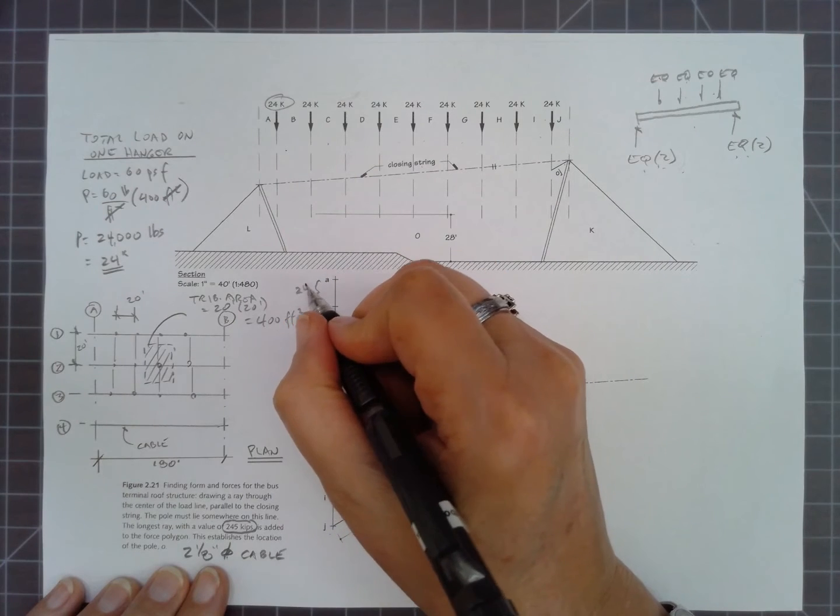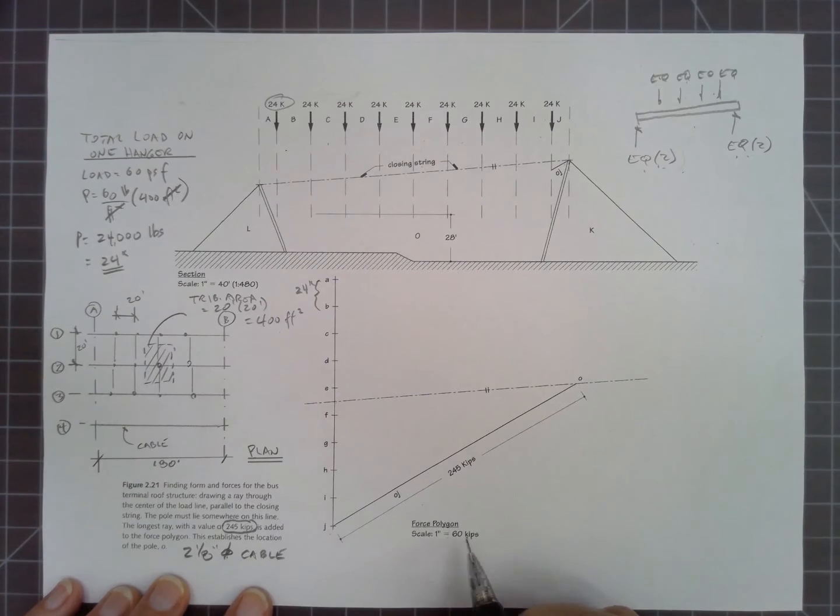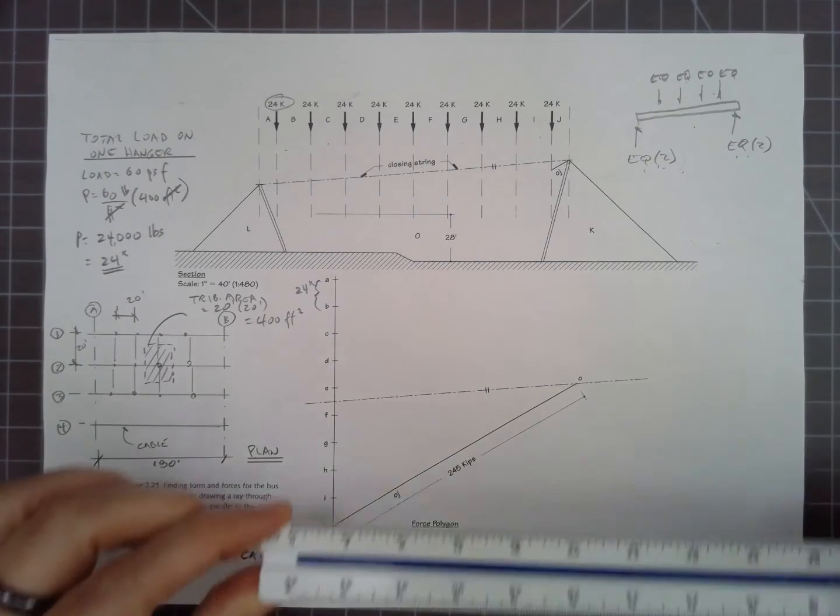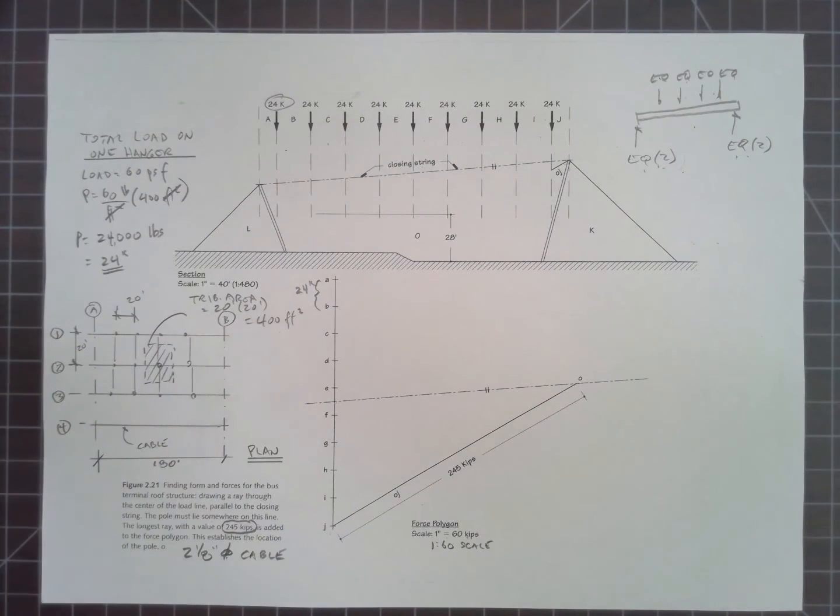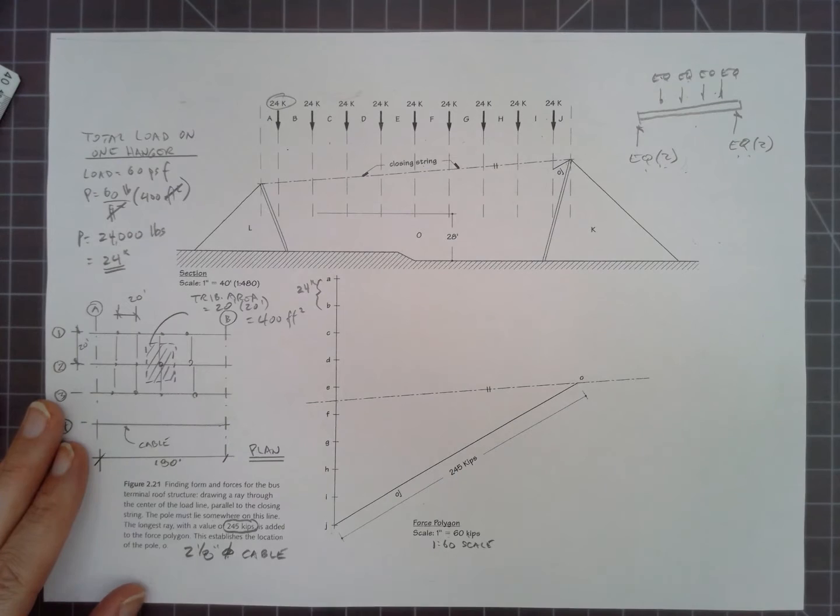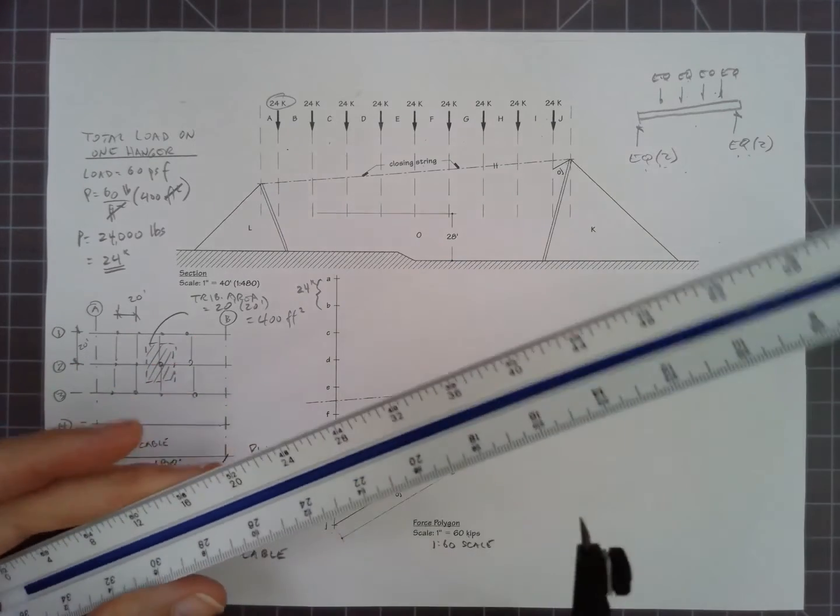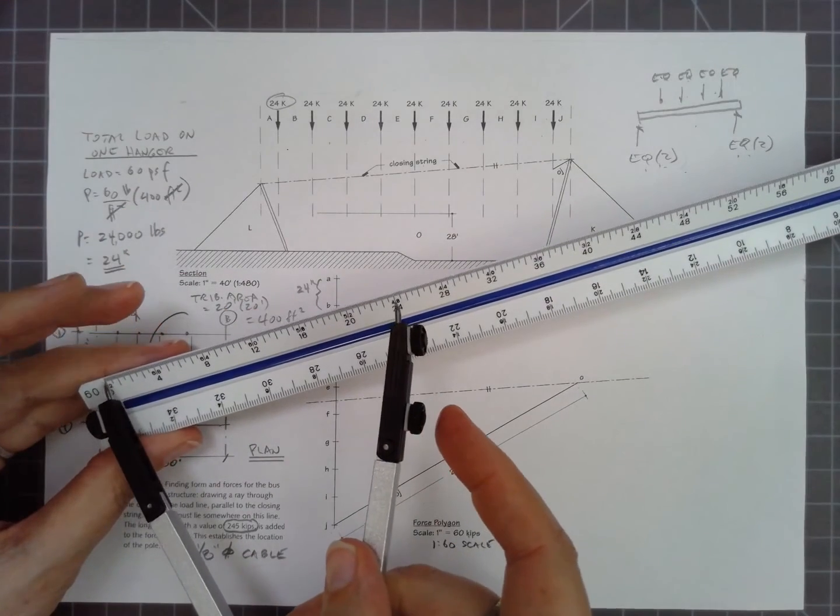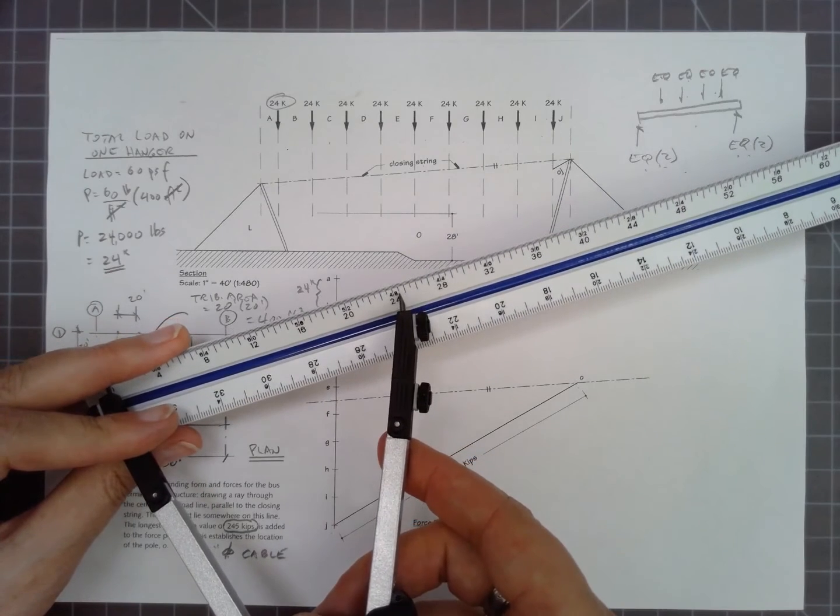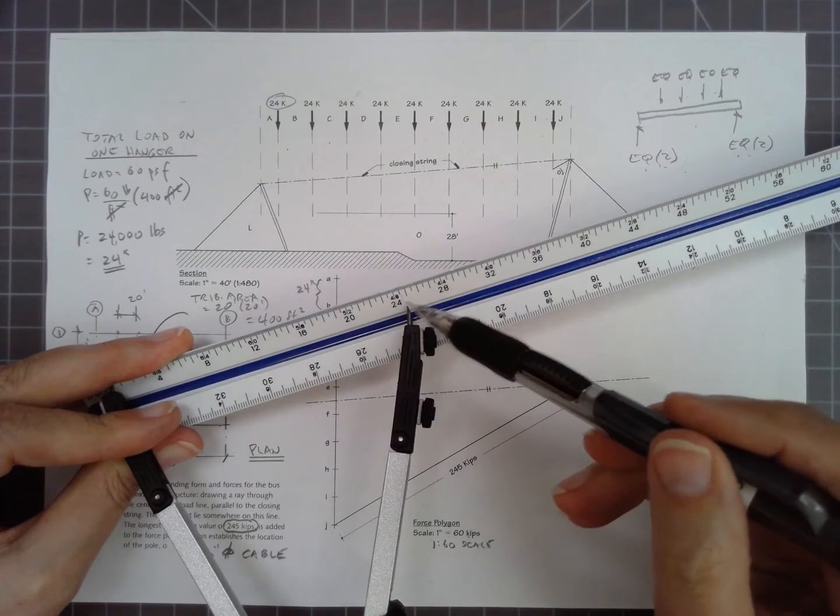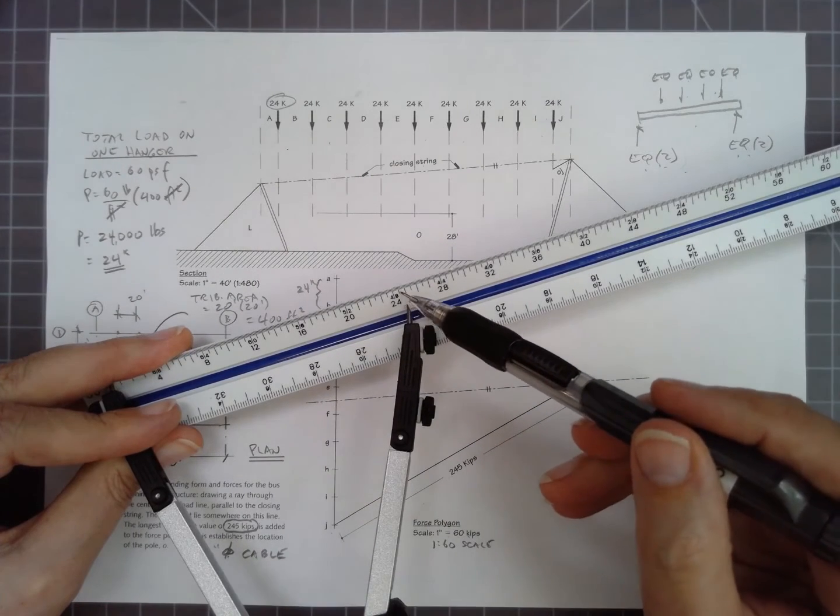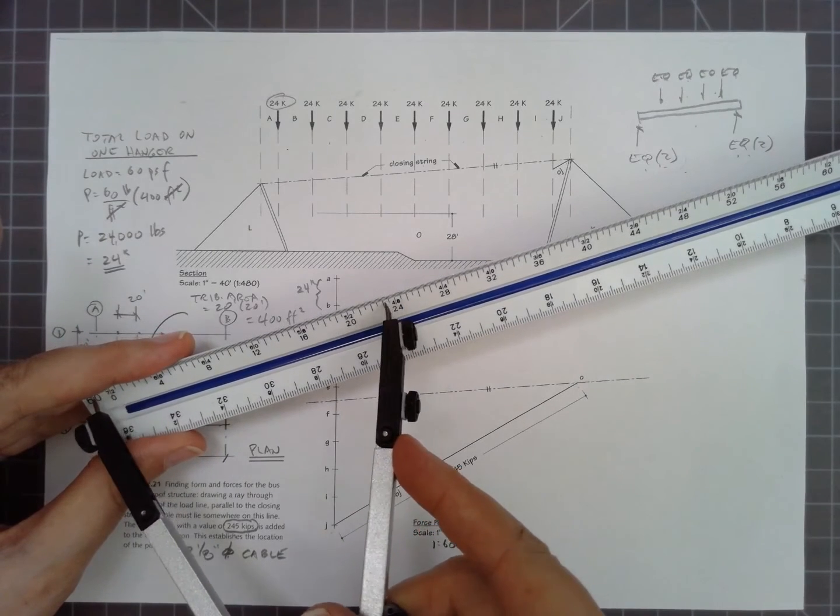This is already constructed here for us. This is a value of 24 kips at a scale of 1 inch to 60 kips. That's a 1 to 60 scale on an engineering scale. Now the cable is sized for a maximum force of 245 kips. That means that the longest line we can have here is 245 kips. One way we can go about that is to actually set our scale so that that actually becomes our maximum. Here's 245 is right here. I'm going to set this exactly to 245.